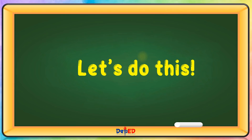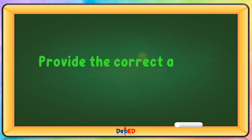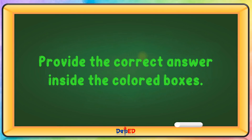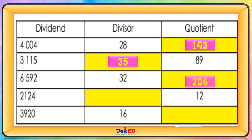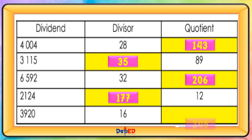Let's do this. Provide the correct answer inside the colored boxes. Dividend 4,004, divisor 28, quotient 143. Dividend 3,115, quotient 89, divisor 35. Dividend 6,592, divisor 32, quotient 206. Dividend 2,124, quotient 12, divisor 177. Dividend 3,920, divisor 16, quotient 245.